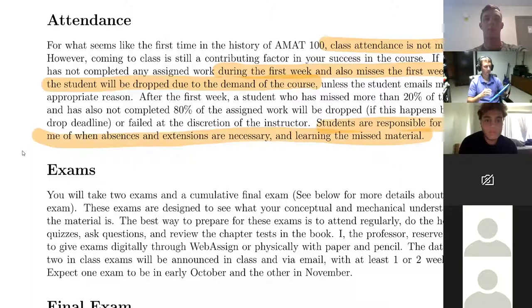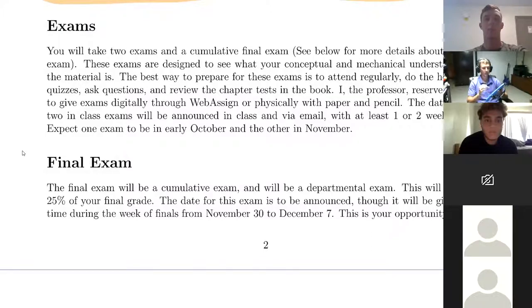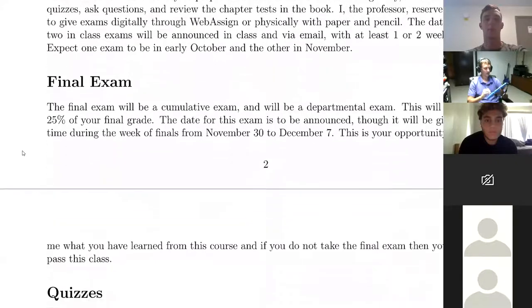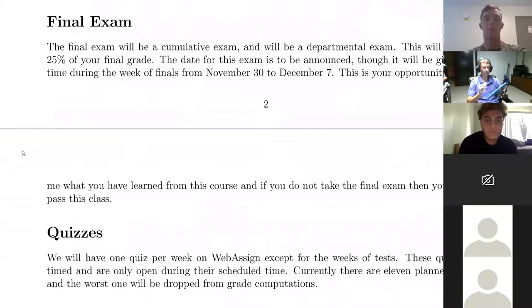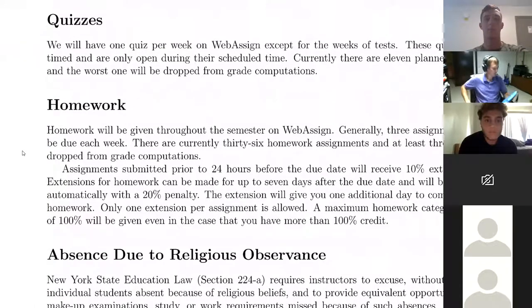There will be two exams for this class plus a final exam. The two midterm exams cover chapters 1 and 2, then chapters 3, 4, and 5. The final exam is cumulative and will be given during the final exam period. All exams will be on WebAssign, though the final might be pen-and-paper — currently it's planned to be on WebAssign. The final exam is 25% of your grade, the largest single chunk.